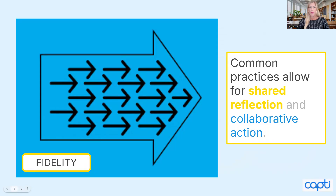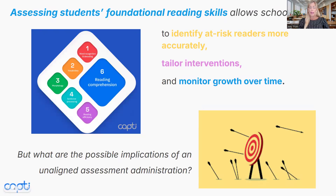In education, fidelity means implementing something exactly as it was intended to determine its effectiveness. For Read Basics, this means administering the assessment according to its standardized procedures. The deep insights Read Basics provides into a student's foundational reading skills are only valid when administered with fidelity. Even small changes to the administration process — perhaps simplifying a direction or altering timing — can lead to unreliable results and undermine the consistency of data across your classroom, your school, or even benchmark periods. This lack of consistency makes it incredibly difficult to track growth or identify true trends.